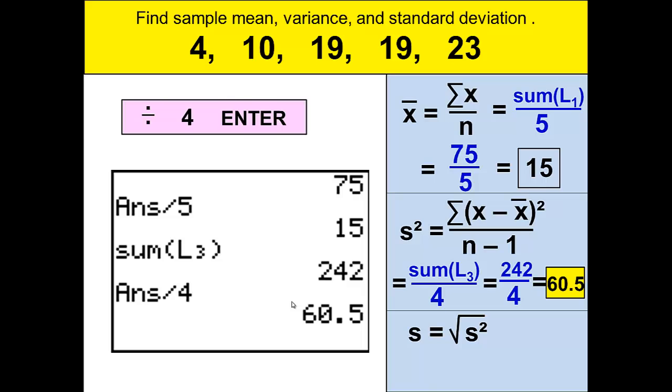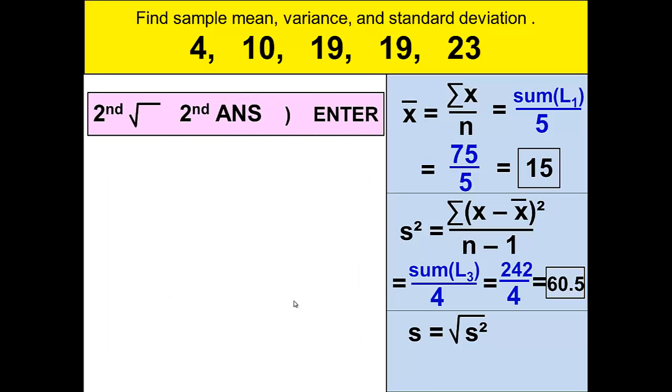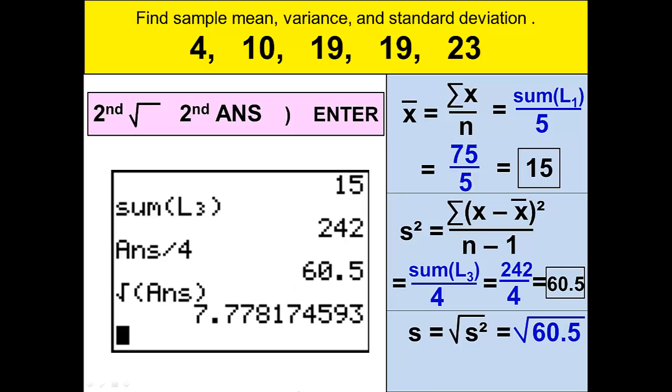We're still not done because it also wants us to find the standard deviation. And the easiest way to do that is to let the calculator do most of the work for us. If we press 2nd and then square root, and then instead of typing out, which we could, if you'll go 2nd and then ans and then close the parentheses that will give you your previous answer. It shows up as ans but it takes your previous answer and in this case we'll take the square root of that and we'll get our answer at 7.778174593.